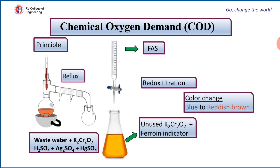Now we will study the principle behind this method. A known volume of wastewater is refluxed with a known amount of potassium dichromate in concentrated sulfuric acid medium containing silver sulphate and HgSO4. Wastewater is refluxed along with these reagents because we do not know the nature of the impurities in it; in order to undergo complete oxidation, we go for reflux. Silver sulphate acts as a catalyst, whereas HgSO4 avoids the interference of chloride ions — otherwise the purpose of adding silver sulphate will not be served.